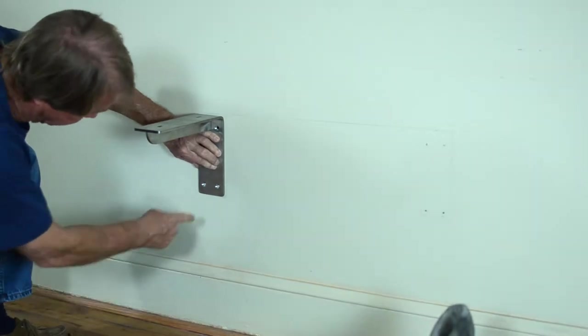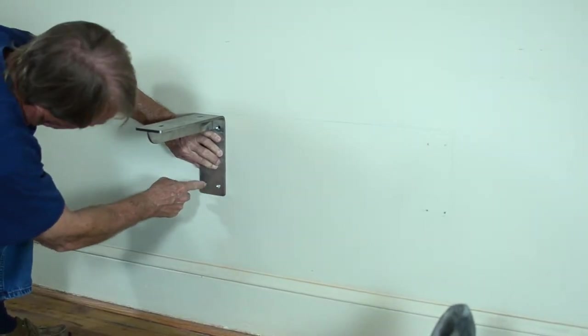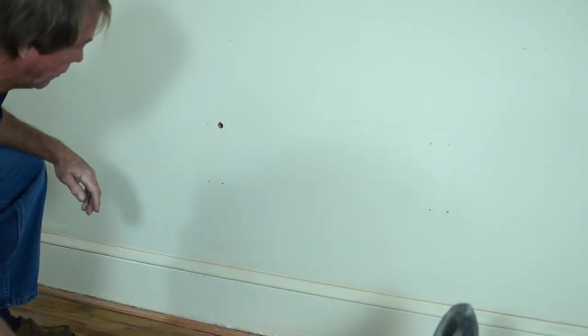You have those two points located. You push the bracket in, take a pencil, mark the holes, take the bracket back off. You're ready to drill. Now we're ready to drill the holes.